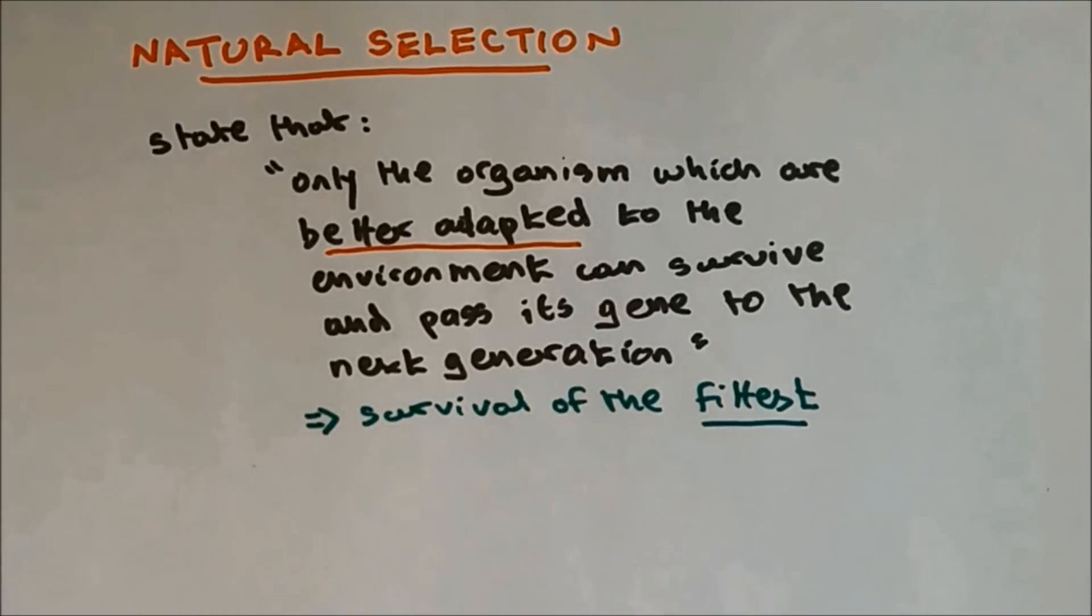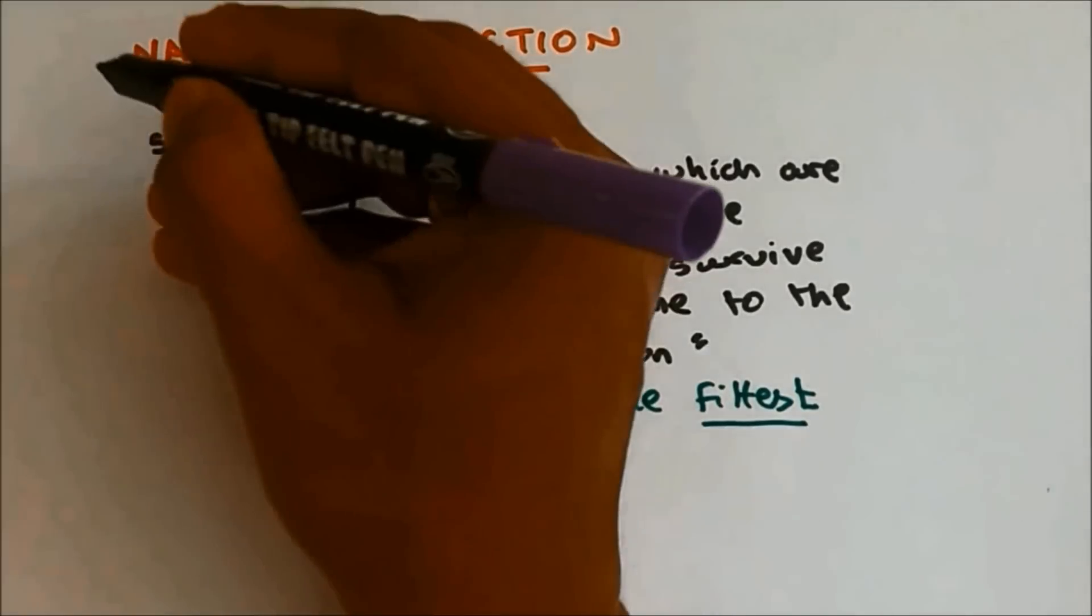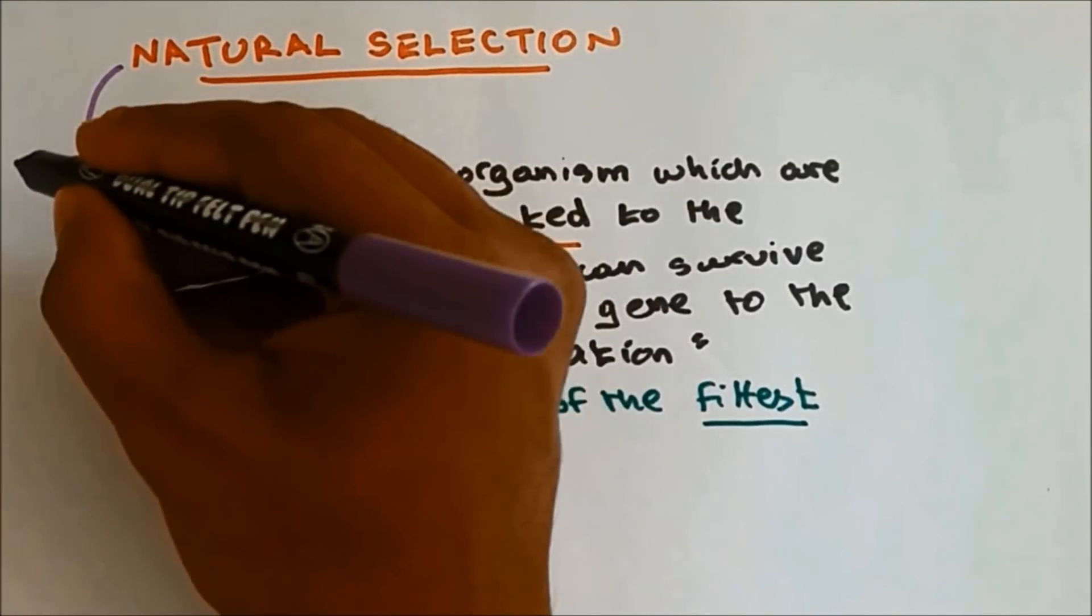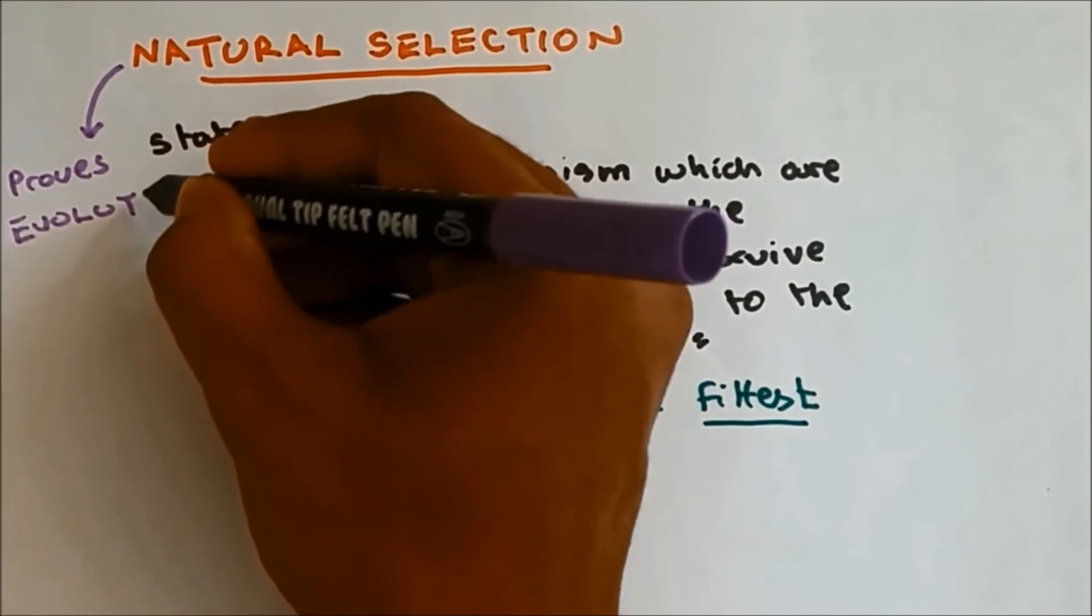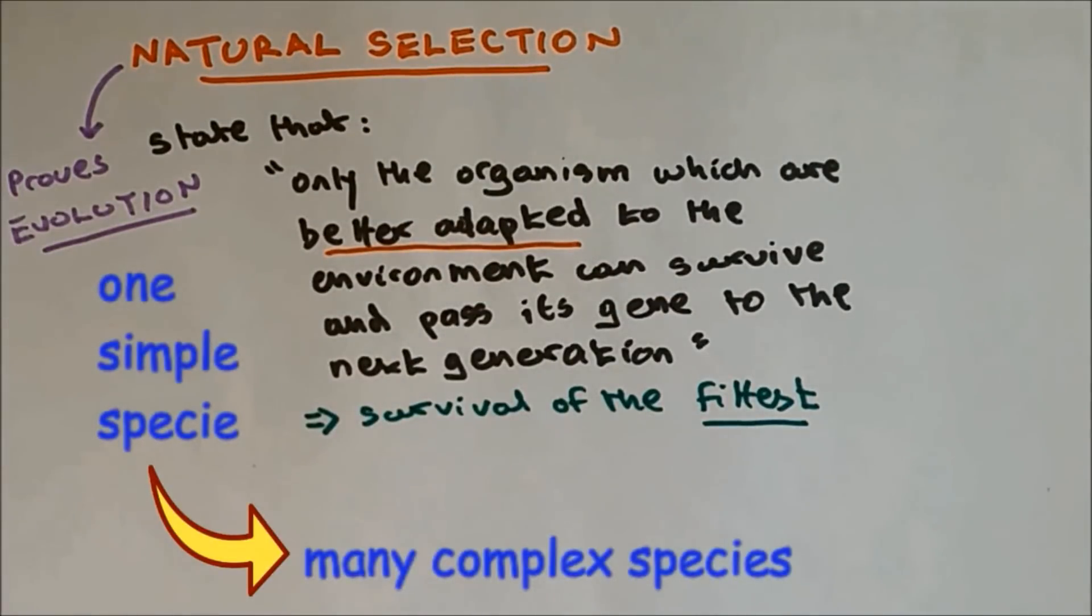So natural selection is called survival of the fittest. I would like to also write that natural selection gives evidence for evolution. Evolution states that more complex organisms have evolved from one simple species. And the reason why complex organisms were able to evolve is because of natural selection.